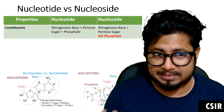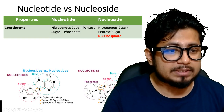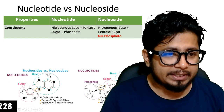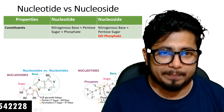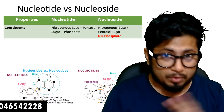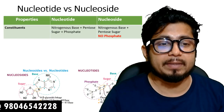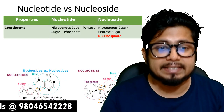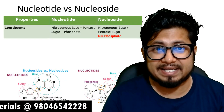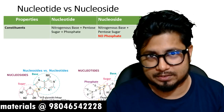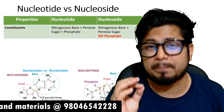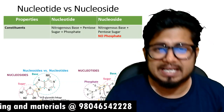Here you can see the picture. When we look at nucleoside, there are only two things: sugar and base. There is no phosphate. But in nucleotide there is sugar, base, and phosphate. That's the primary difference.